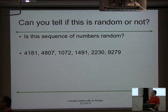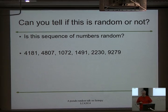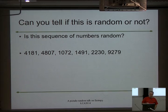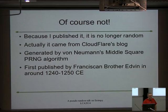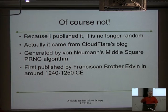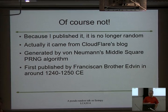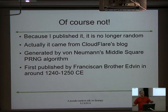Does a sequence of numbers look random to you? Yes, it does look random — they're all four digits. I could run the generator and we'll find out. This is the output of a nice pseudo-random number generator. You can Google that sequence of numbers and find it on Cloudflare's blog. This was invented in 1240 CE by a Franciscan monk. Von Neumann decided, this is how we should do it — it looks really, really good. Please never, ever, ever use it.